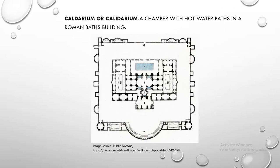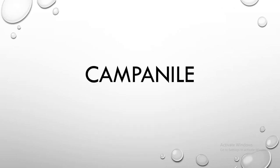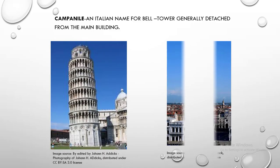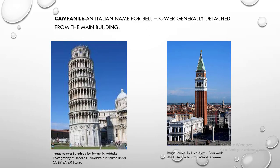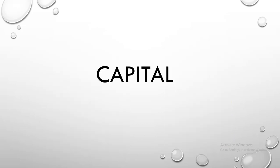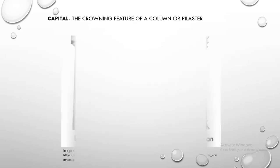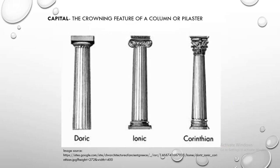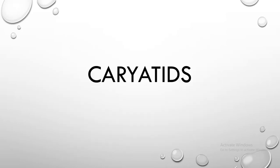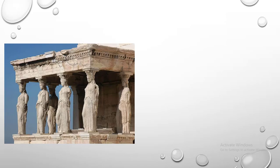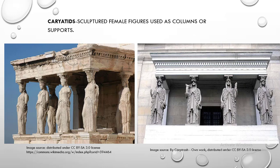Caldarium. Caldarium is a chamber with hot water baths in a Roman baths building. Campanile. Campanile is an Italian name for bell tower, generally detached from the main building. Capital. Capital is the crowning feature of a column or pilaster. Caryatids. Caryatids are sculptured female figures used as columns or supports.